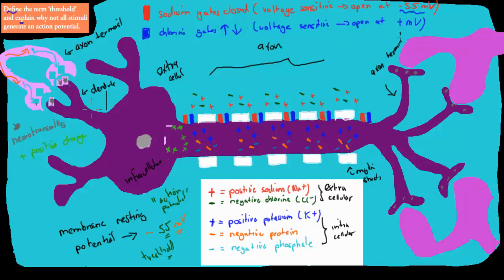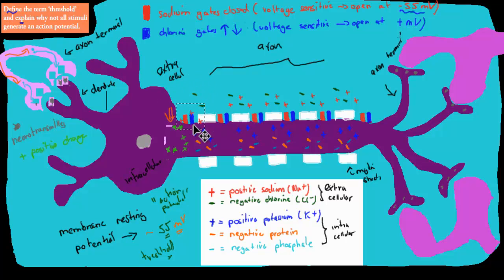So once this stimuli reaches these gates and the voltage hits minus 55 millivolts, the sodium — the red particles — are going to start flooding in. Because there's more sodium on the outside than the inside, diffusion drives them to want to go in, and also the negative charge inside attracts them. The problem was they couldn't go in because the gates were closed. But now at minus 55 millivolts these gates are going to open, and that will allow the sodium to come in.